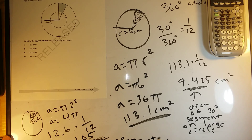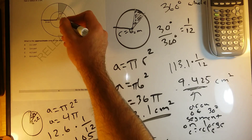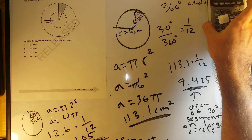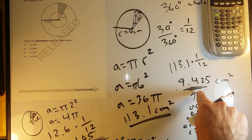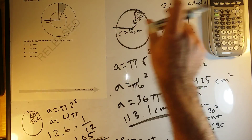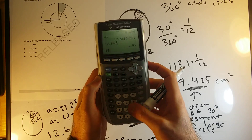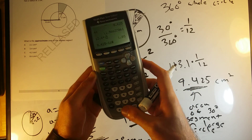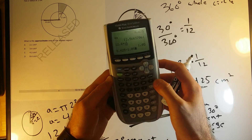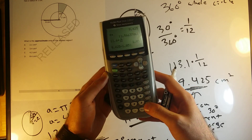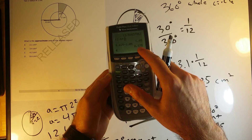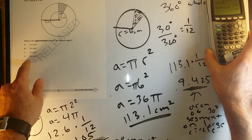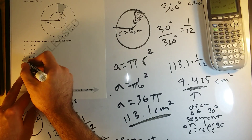So once we have this, we know this is 1.05 for the small part and 9.425 for the whole big area. We just subtract these from each other — the bigger segment minus the small segment. We have 9.425 minus 1.05, which gives us 8.375, and I'll round that to 8.4. So the answer is D.